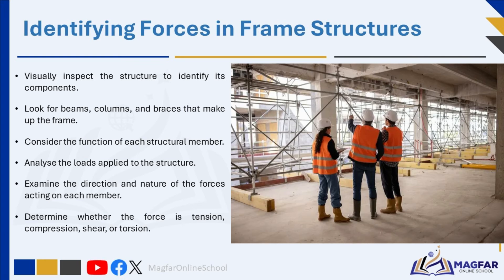How would you identify forces acting on a frame structure? To do this, you can follow these steps: Visually inspect the structure to identify its components — look for beams, columns, and braces that make up the frame. Consider the function of each structural member. Analyse the loads applied to the structure. Examine the direction and nature of the forces acting on each member. Then determine whether the force is tension, compression, shear, or torsion.